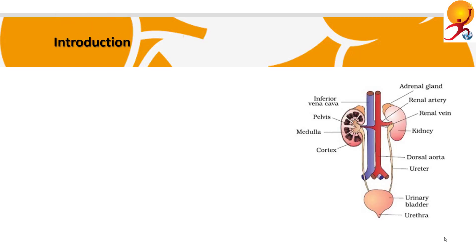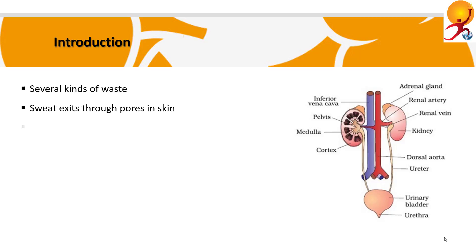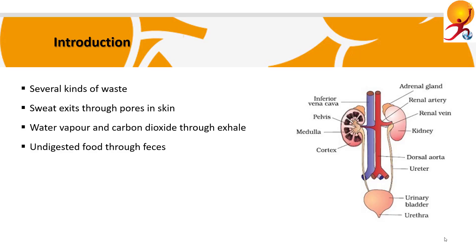Several kinds of wastes including sweat, carbon dioxide, gas, feces or stool and urine are produced by our body. These wastes exit the body in different ways. Sweat is released through pores in the skin. Water vapor and carbon dioxide are exhaled from the lungs. Undigested food materials are formed into feces in the intestine and excreted from the body as solid waste and bowel movement.